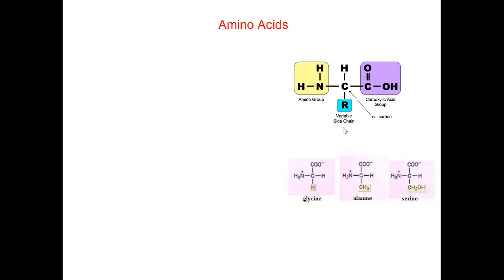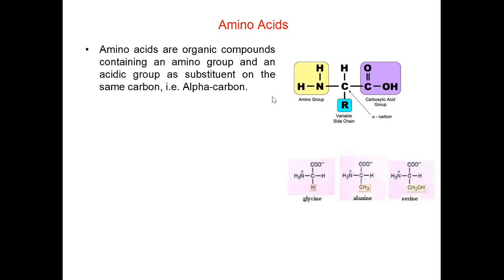Let us begin today's chapter with amino acids. Amino acids are organic compounds containing an amino group and an acidic group as substituent on the same carbon, that is alpha carbon. This is the alpha carbon here. The carbon with whom there are functional groups attached. That carbon is known as alpha carbon.